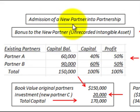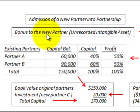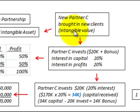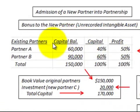Here we're going to be looking at the admission of a new partner into a partnership. Our example is going to be for a bonus that's going to go to the new partner for some unrecorded intangible asset. The existing partners are going to pay a bonus for the new partner to come into their partnership. The new partner C is going to bring some new clients into the partnership, and it has an intangible value.